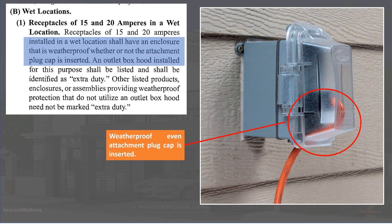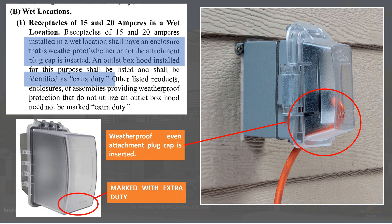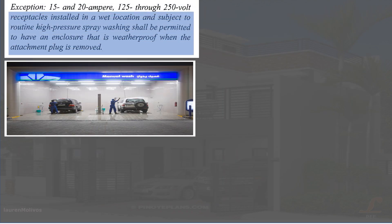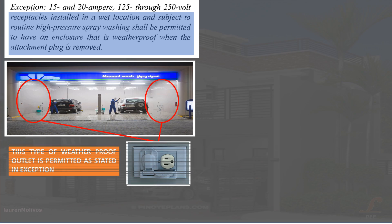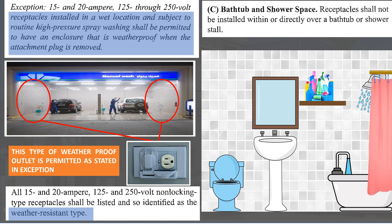Receptacle outlets installed in a wet location shall have an enclosure that is weatherproof whether or not the attachment plug cap is inserted. An outlet box hood installed for this purpose shall be listed and identified as extra duty. Other listed products, enclosures, or assemblies providing weatherproof protection that do not utilize an outlet box hood need not be marked extra duty. Exception: receptacles in a wet location subject to routine high pressure spray washing shall be permitted to have an enclosure that is weatherproof when the attachment plug is removed, and non-locking receptacles shall be a listed weather resistant type. An outlet cannot be installed within or directly over a bathtub or shower stall.